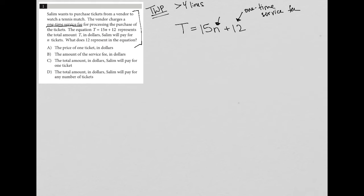So here is our one-time service fee, and here is our per ticket fee. So $15. What does 12 represent in the equation? Okay, so perfect.